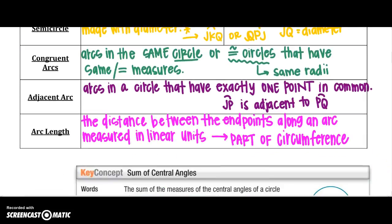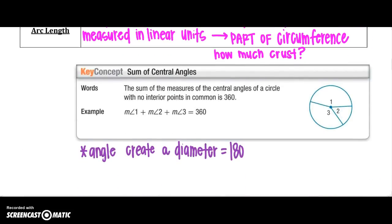Arc length is the distance between the endpoints along the arc, measured in linear units — it's going to be part of our circumference, or how much crust you get out of the pizza. For central angles, the sum of the measures of all central angles of a circle with no interior points in common is 360 degrees. So angle 1 plus angle 2 plus angle 3 equals 360 degrees.